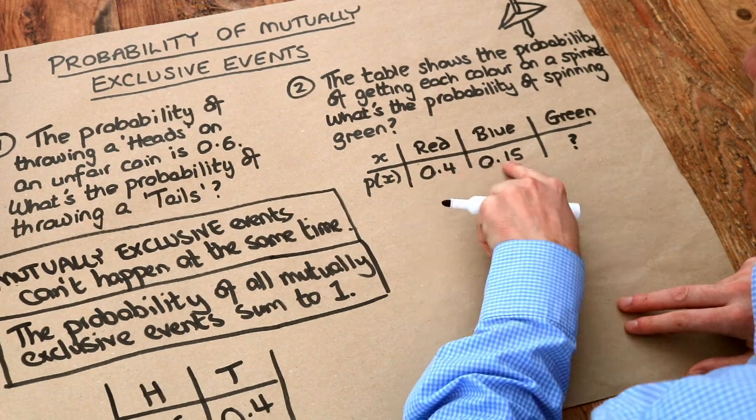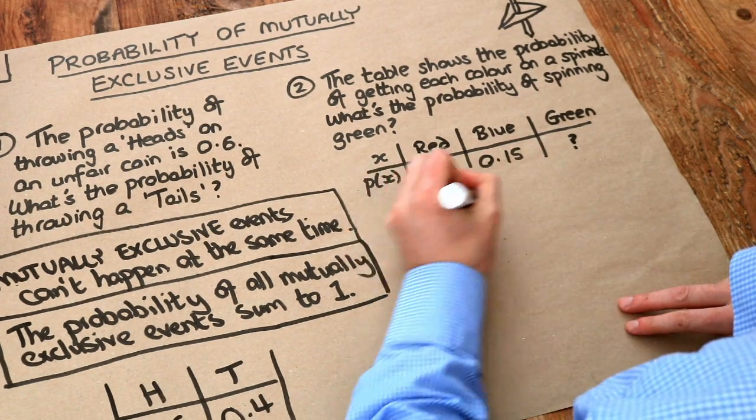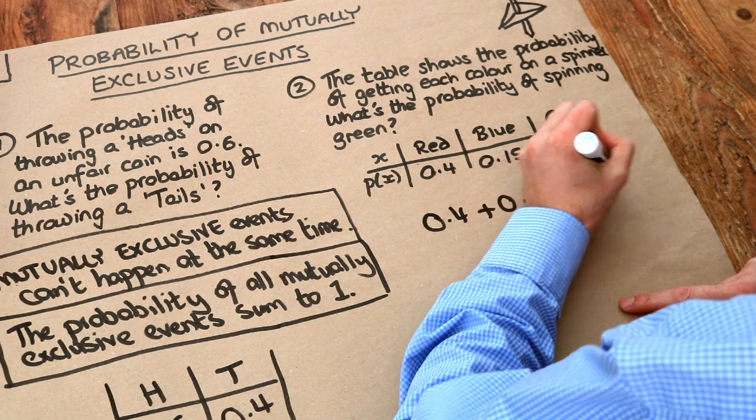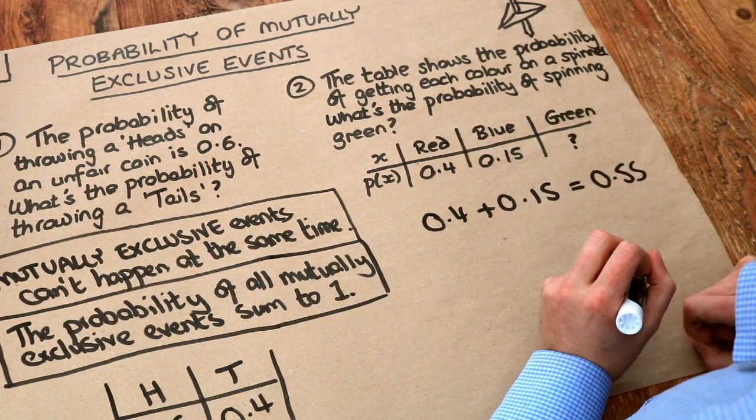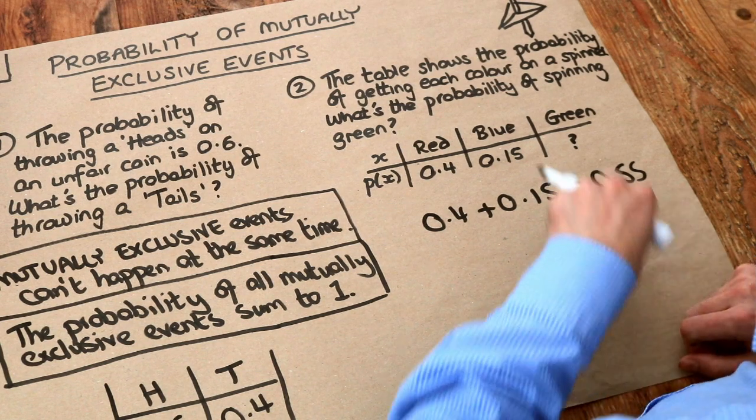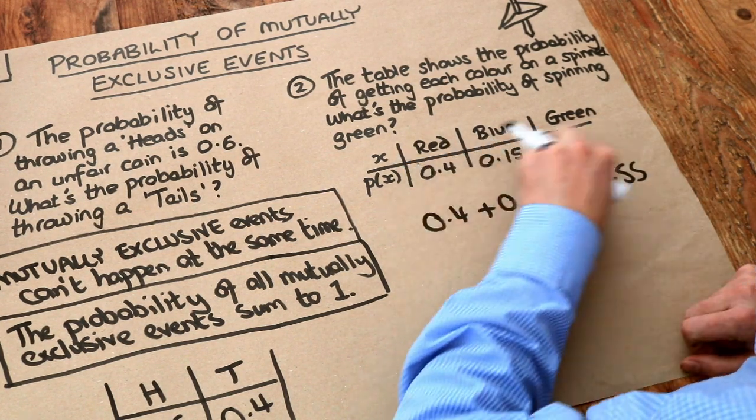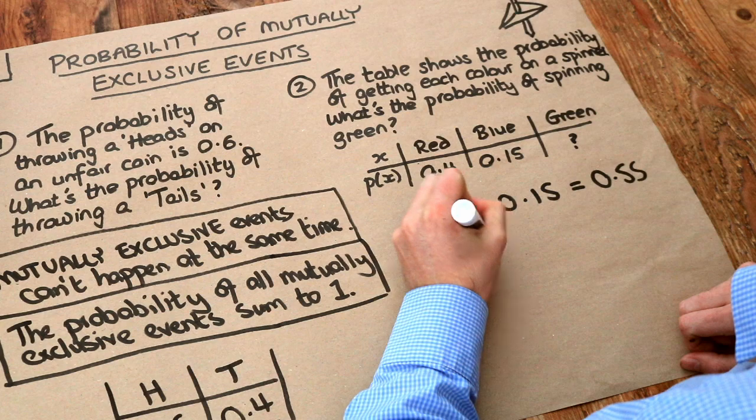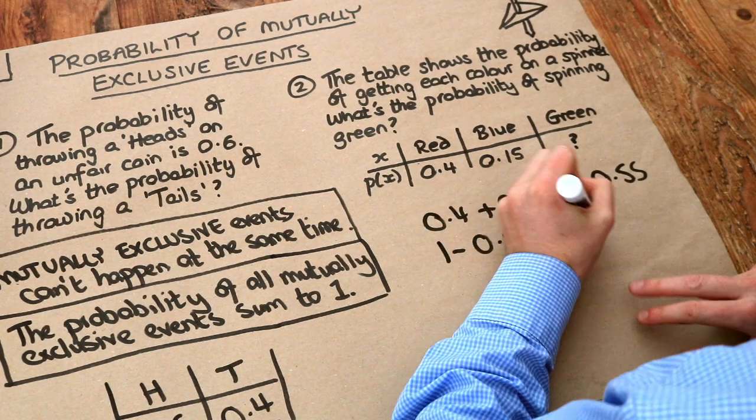So if we add up these two so far, we got 0.4 plus 0.15 is equal to 0.55, and then we just subtract that from one to find the remaining probability if they all have to add up to one. So we just do one minus 0.55 and that is 0.45.